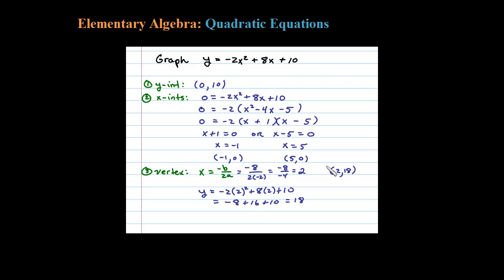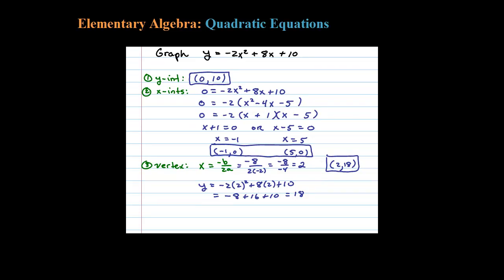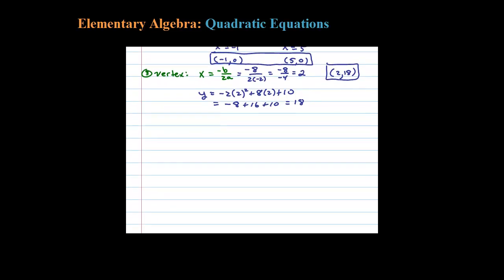We have our vertex, we have our x-intercepts, we have our y-intercept, and we know the parabola opens down. So now we're ready to graph this. Let's draw in a blank Cartesian coordinate system and choose an appropriate scale. Now let's plot our points. (0, 10) was our y-intercept.